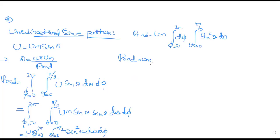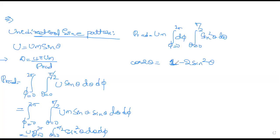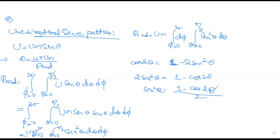Now, sin²θ can be written using the formula: cos2θ = 1 − 2sin²θ, so sin²θ = (1 − cos2θ)/2. You need to remember this formula. Substituting: Prad = Um · ∫₀^(2π)dφ · ∫₀^(π/2) [(1 − cos2θ)/2]·dθ.